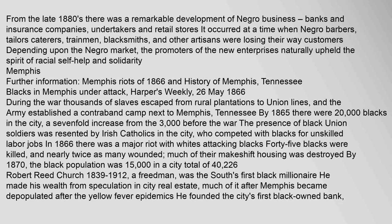During the war, thousands of slaves escaped from rural plantations to Union lines, and the Army established a contraband camp next to Memphis, Tennessee. By 1865 there were 20,000 blacks in the city, a sevenfold increase from the 3,000 before the war. The presence of black Union soldiers was resented by Irish Catholics in the city who competed with blacks for unskilled labor jobs. In 1866 there was a major riot with whites attacking blacks: forty-five blacks were killed and nearly twice as many wounded.